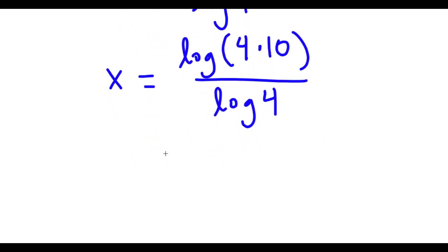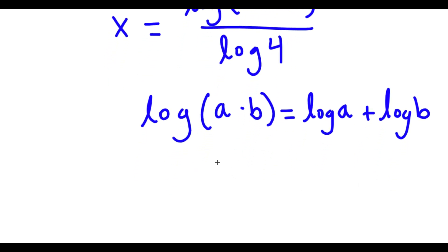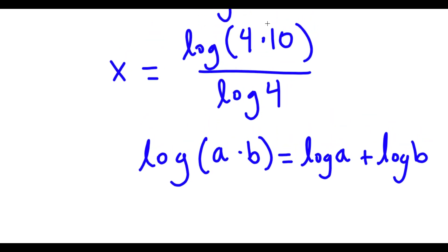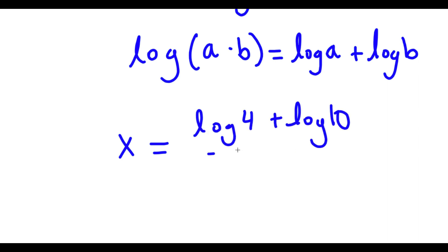Now, if I have something in the form log(a times b), this is equal to log a plus log b. So in this case, I have log(4 times 10), so this is equal to log 4 plus log 10, and now I have this over log 4.